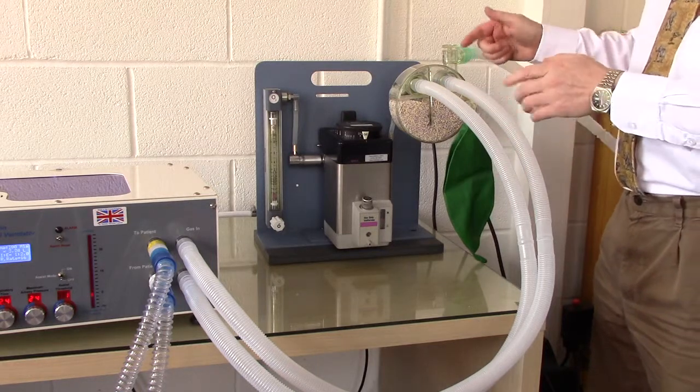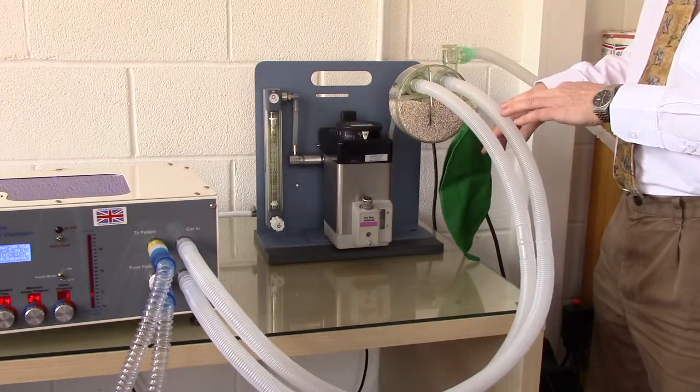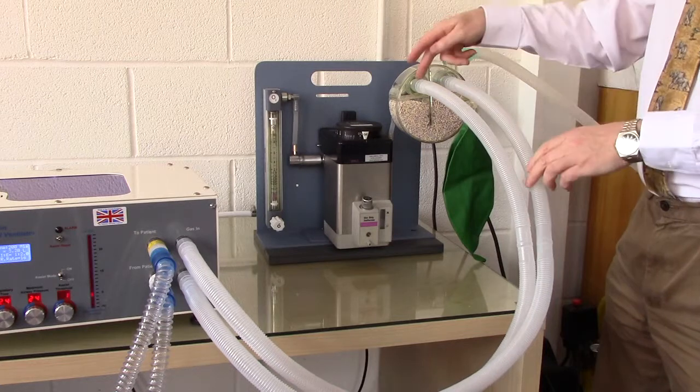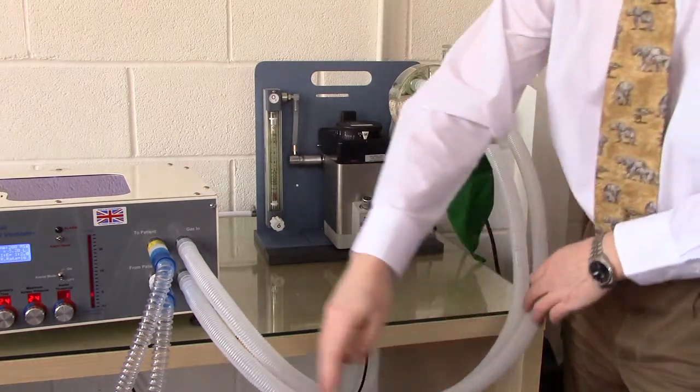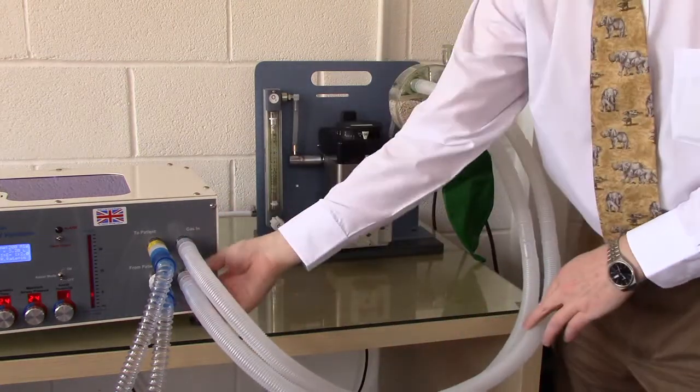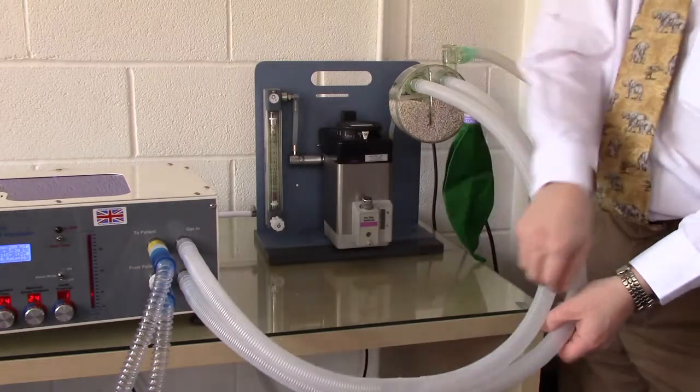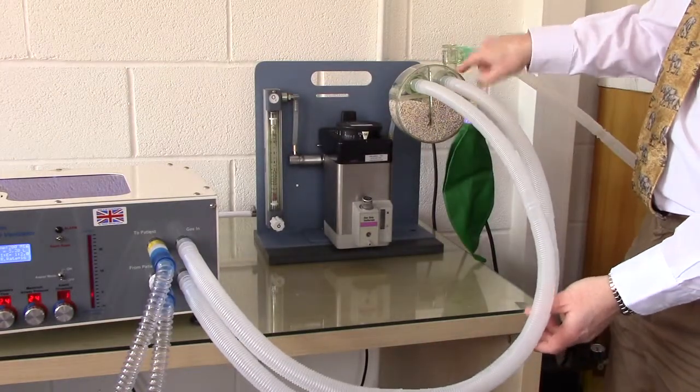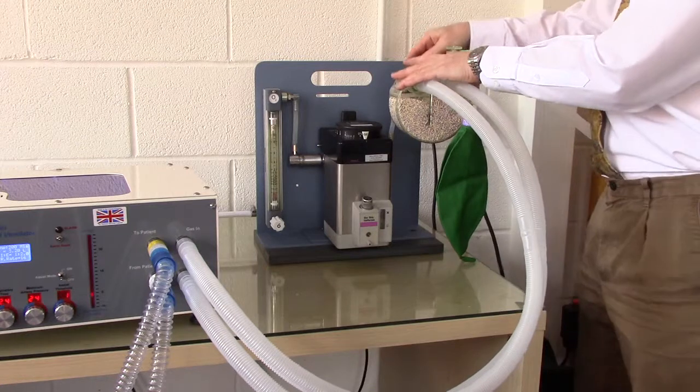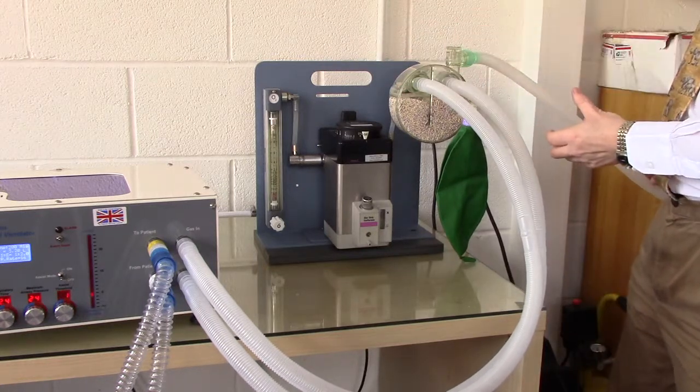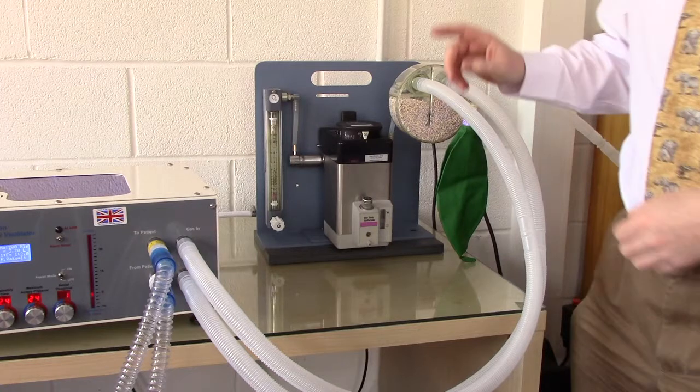In this configuration there must be a reservoir bag on the inspiratory limb to take up incoming gases. Gas from the inspiratory port of the circle passes down to the gas in port of Merlin, and gas from the gas out port of Merlin passes back up to the expiratory port of the circle. Then excess gas is voided through the spill valve out into the waste gas circuit.